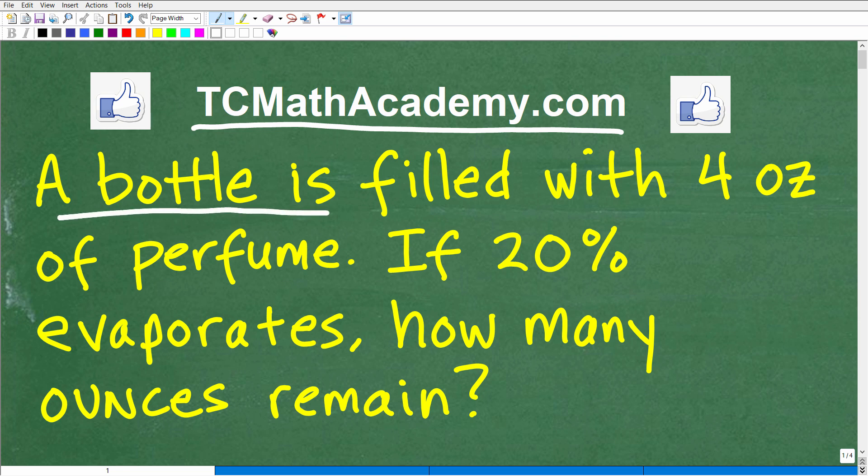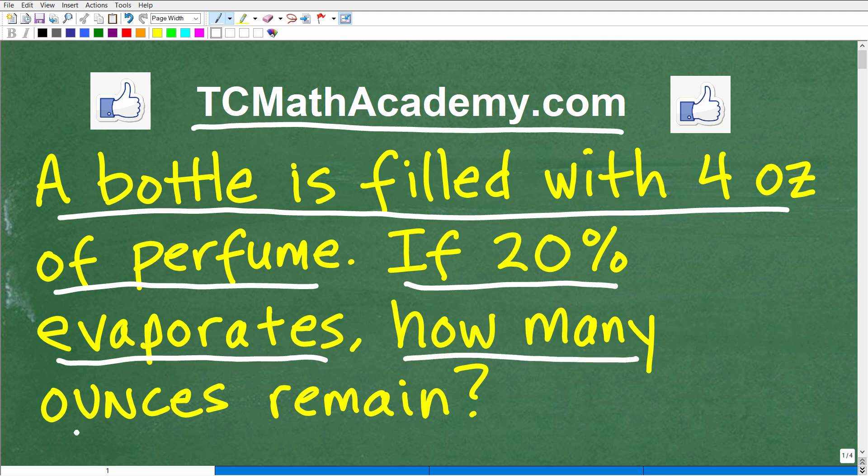Let's go ahead and read the problem. It says a bottle is filled with 4 ounces of perfume. If 20% evaporates away, 20% of the perfume evaporates away.